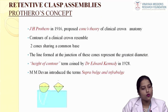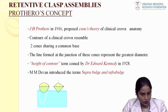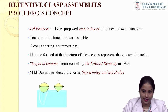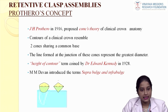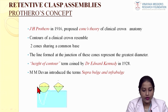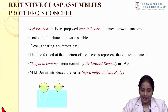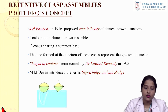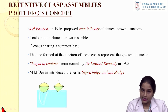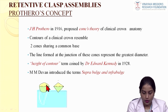Coming to the clasp assembly. J.H. Prothiro in the year 1960 proposed the cone theory. According to this cone theory, the contours of the clinical crown resemble two cones sharing a common base. This common base is the area of greatest circumference, called the height of contour, which was coined by Dr. Edward Kennedy in 1928. Anything above the height of contour is called the suprabulge area and anything below is called the infrabluge area.